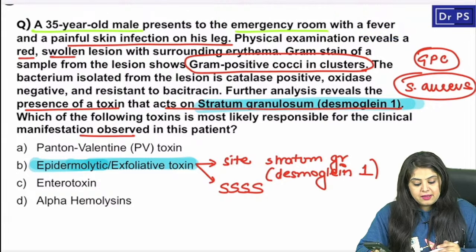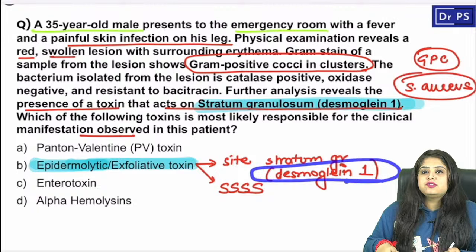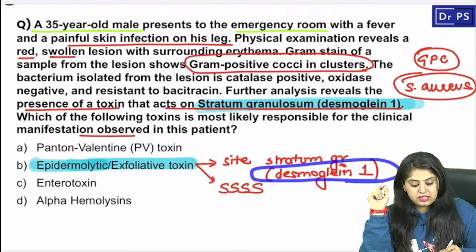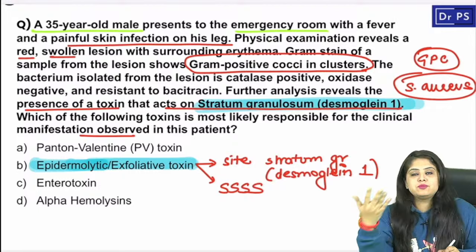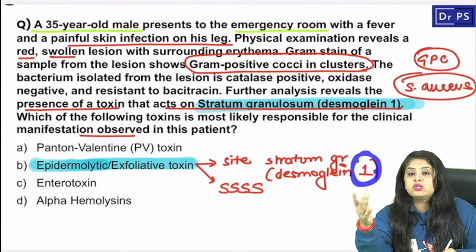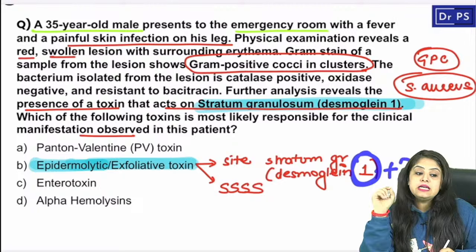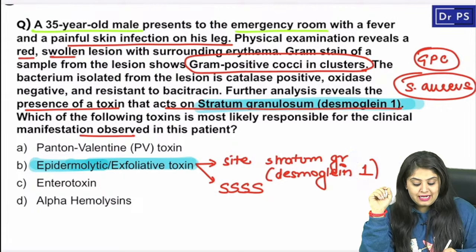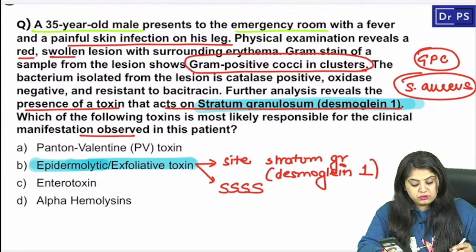Desmoglein 1 is also targeted by antibodies in pemphigus foliaceous. If both desmoglein 1 and 3 are affected, that is pemphigus vulgaris. Desmoglein 1 alone is pemphigus foliaceous — remember this from your dermatology and pathology skin revision.